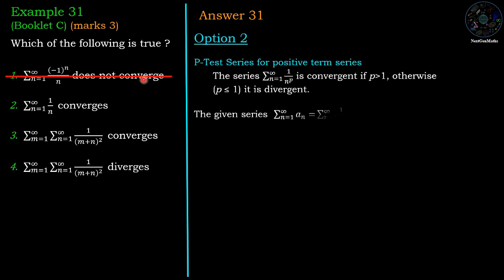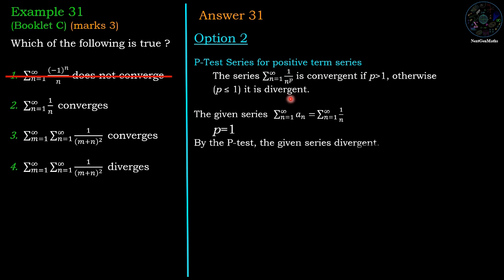For Option 2, we use the P-series test. Here a_n = 1/n, which compares with the P-test form 1/n^p, so p = 1. If p = 1, then by the P-test it is a divergent series. But the option states it is convergent, so it is wrong.